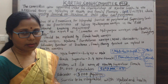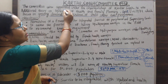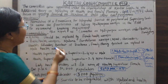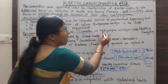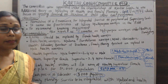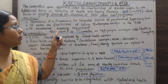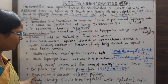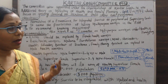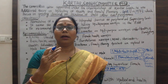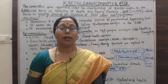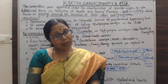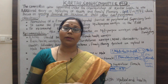To summarize the important points: the committee was set up in 1972 and gave its report in 1973. The other name is 'Committee on Multi-Purpose Workers under Health and Family Planning.' The objectives include formulation of a framework for integrated service at periphery and supervisor levels. ANMs were replaced by female health workers, and three to four female multi-purpose workers are supervised by one female health supervisor.